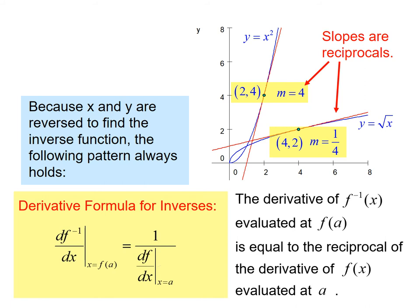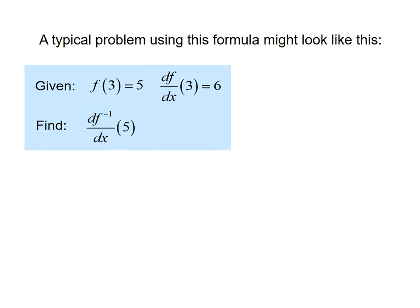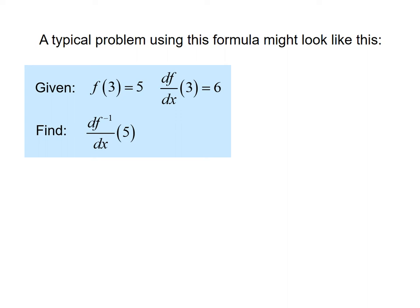So here's some information you might see. f(3) equals 5, the derivative of f at 3 equals 6. We want to find the derivative of the inverse at 5. We'll notice that we have the point (3,5) for the original function. So if we're looking at an inverse function, we would have the point (5,3). Those are the corresponding points, and the derivative at that corresponding point would be the reciprocal, so it would be 1 sixth.